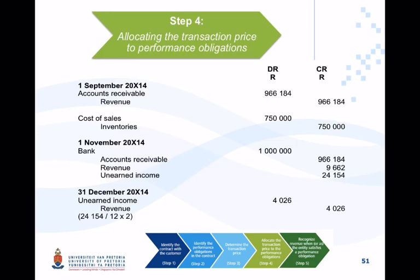Looking at the journal entries: on 1 September you'll see revenue recognized of 966,000 Rand — not the full 1 million Rand. On 1 November, revenue of 9,000 Rand is recognized — again not the 10,000 Rand standalone price. There is also some unearned income relating to training delivered over time, again not at the standalone selling price.